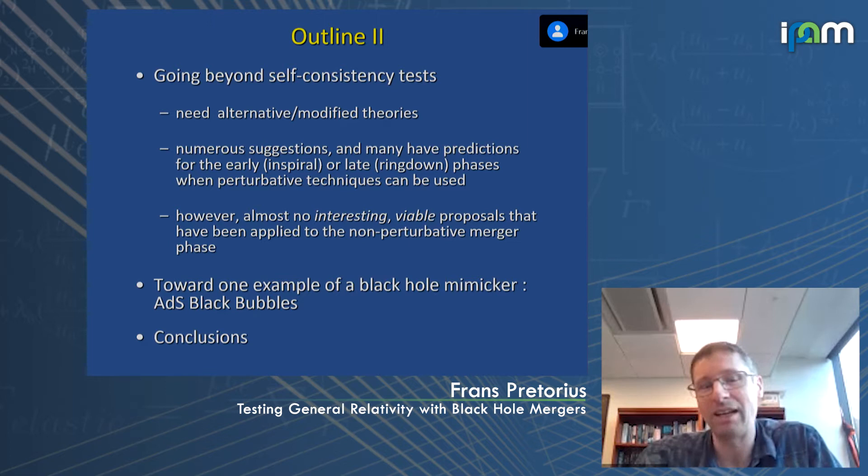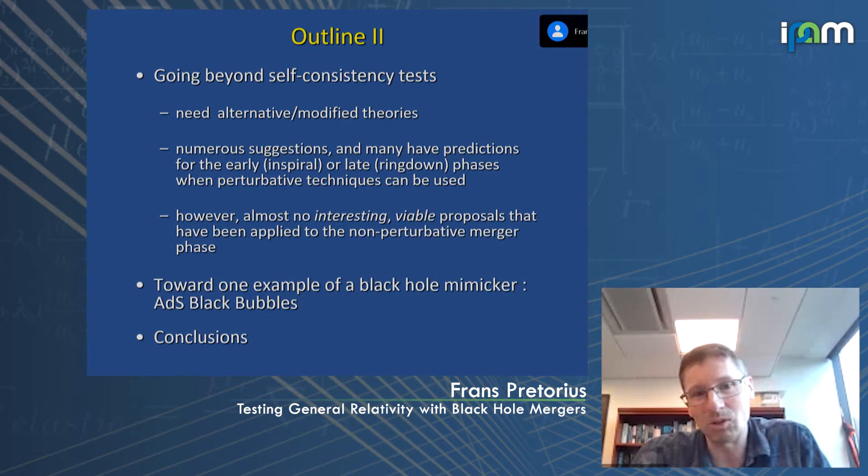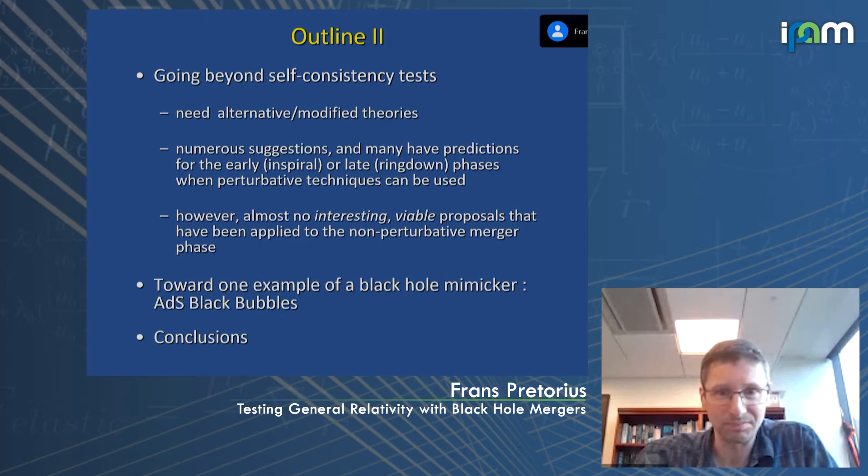The merger phase is where the black holes coalesce — arguably the most interesting part of the merger phenomenon, and where the most obvious deviations from relativity should be apparent if they're present. I'll explain very carefully what I mean by 'interesting' and 'viable', not to offend too many people.